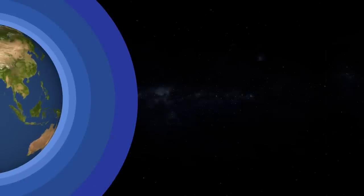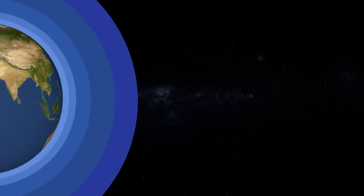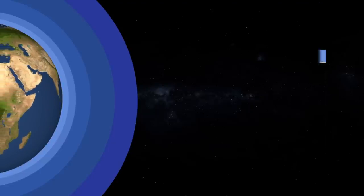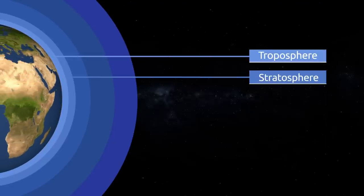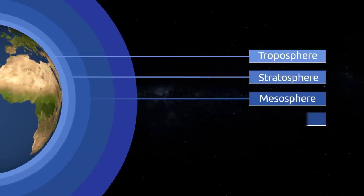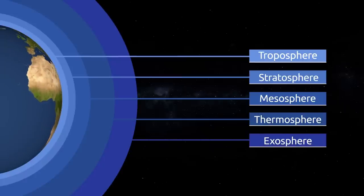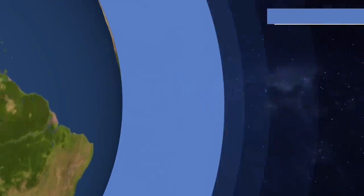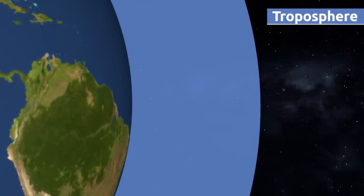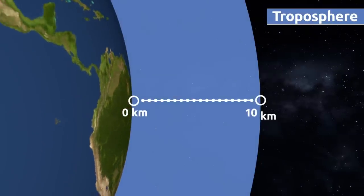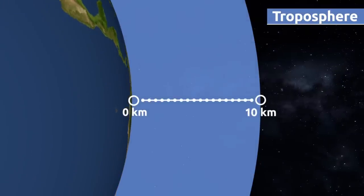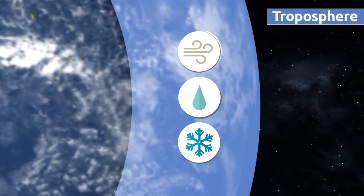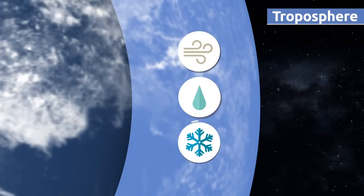Depending on altitude, the composition of the atmosphere changes, dividing it into five main layers: the troposphere, the stratosphere, the mesosphere, the thermosphere, and the exosphere. The troposphere is the layer closest to the surface of the earth, measuring approximately 10 kilometers high. Clouds are found in the troposphere, and weather phenomena like wind, rain, or snow occur here as well.